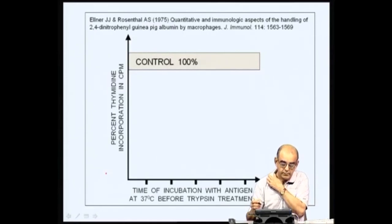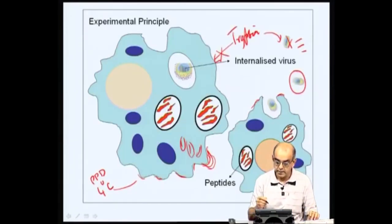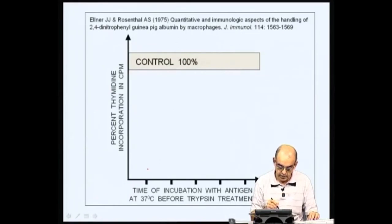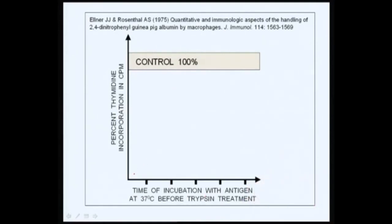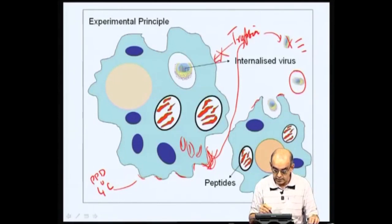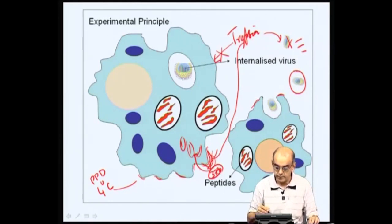They found that at earlier time points, because the PPD was still outside, trypsin could act on it and remove the PPD, so there was no PPD available due to trypsin action soon after 4-degree pulsing. At lower times of 37-degree incubation, there was very little thymidine incorporation in the T cells that had to see the antigen. But as time elapsed, at 37 degrees the PPD went inside, and trypsin had no PPD to act on outside.